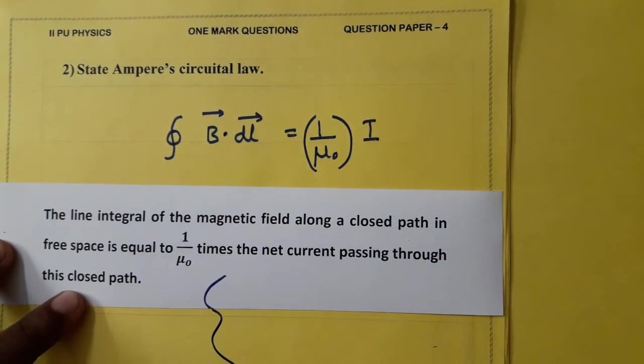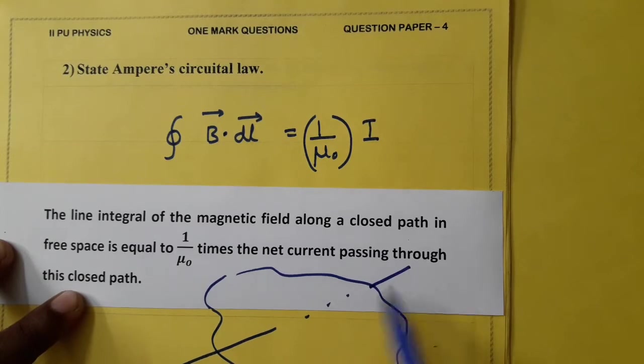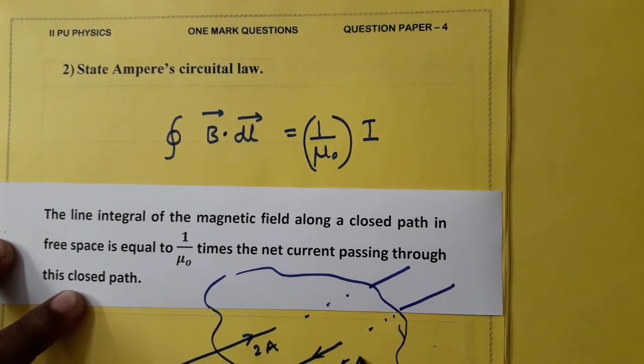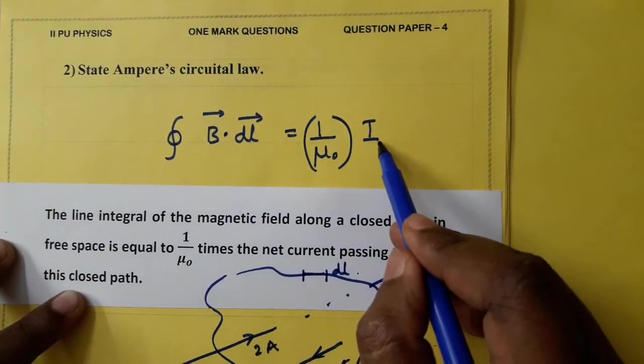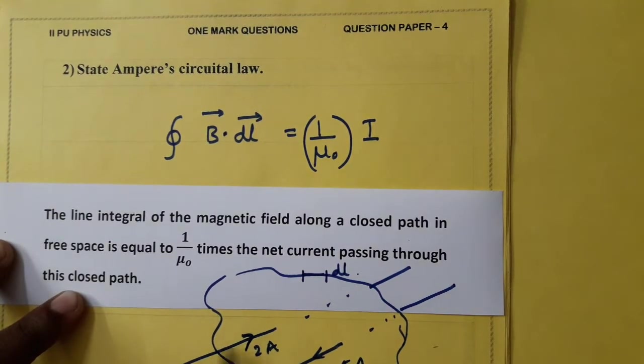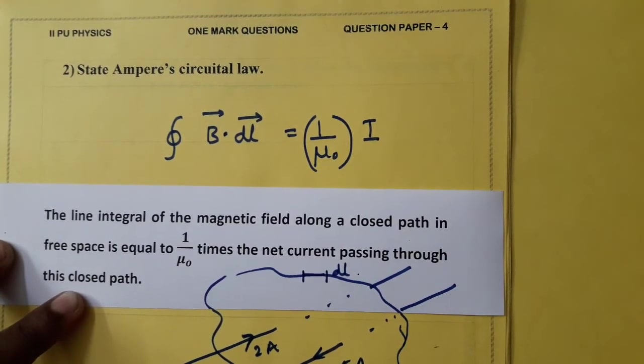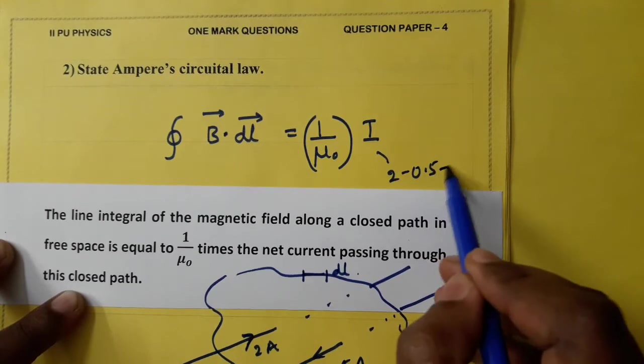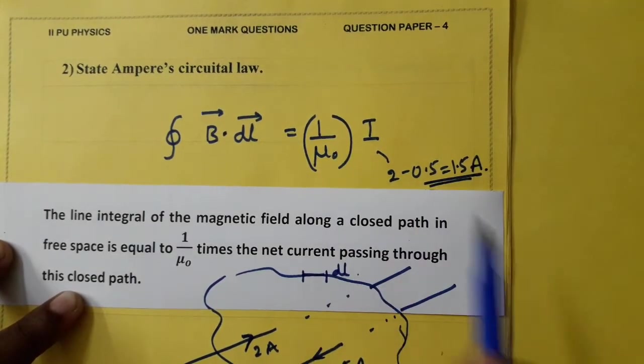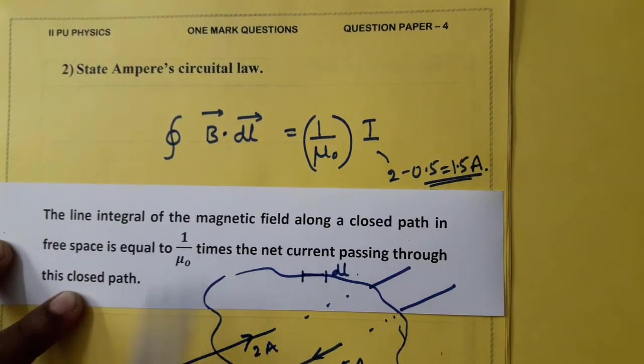If this is a closed path and these two are the conductors, current through this conductor is 2 ampere, current through this conductor is 0.5 ampere. Then small length of this path is dl and this i is net current. 2 ampere is entering, 0.5 ampere is leaving. Therefore, resultant current is 2 minus 0.5 equal to 1.5 ampere. This is how this can be used. This statement is the answer for this question.